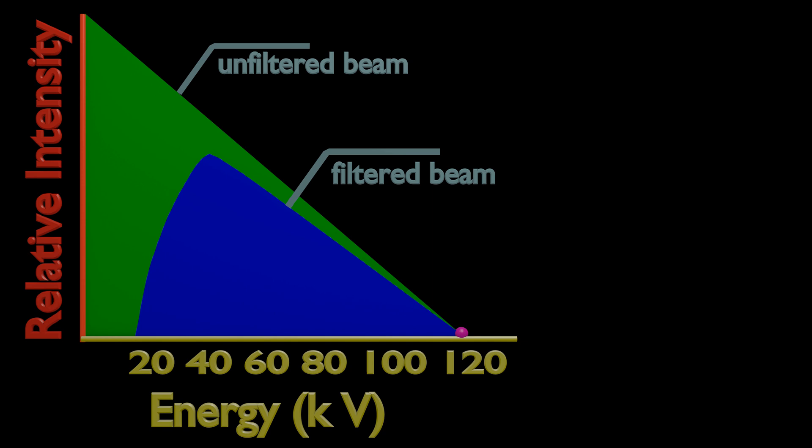Here, 120 kV divided by 3 is 40 kV where peak intensity occurs.